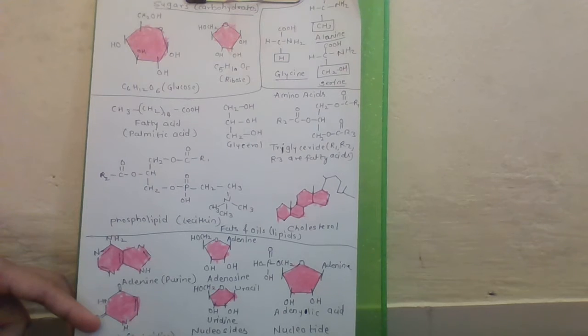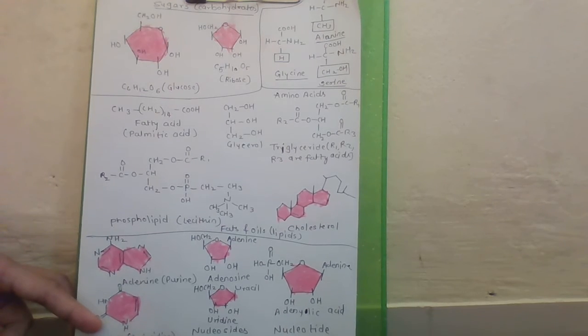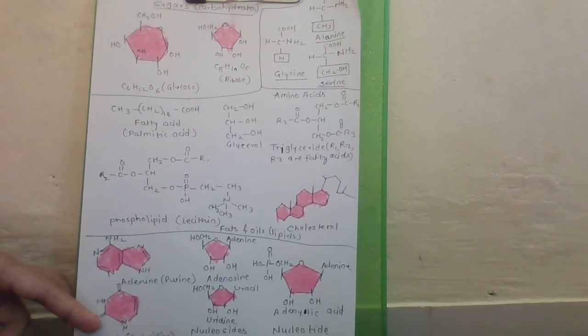Basically these nitrogen bases are divided as nucleosides or nucleotides. In nucleosides we can find adenine, guanine, thymine, cytosine or uracil.